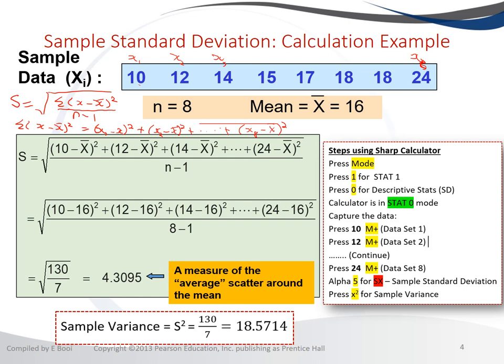To calculate the standard deviation using a calculator, put your calculator into stat mode. These steps are for a scientific calculator — I used a Sharp scientific calculator. If you're using a Sharp financial calculator, the button may be 'data' instead of 'M+'. For a Casio, check the specific steps, but all scientific calculators can calculate the standard deviation.